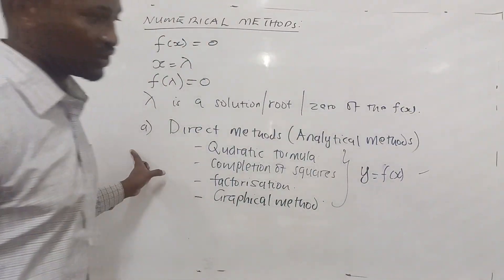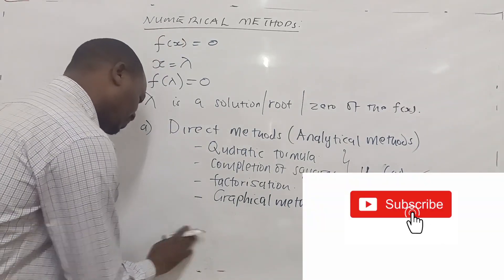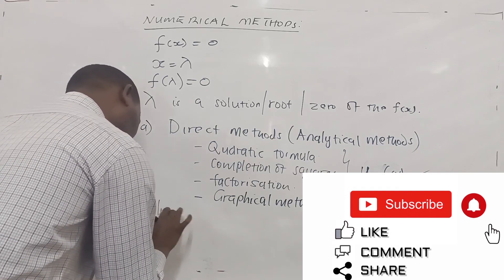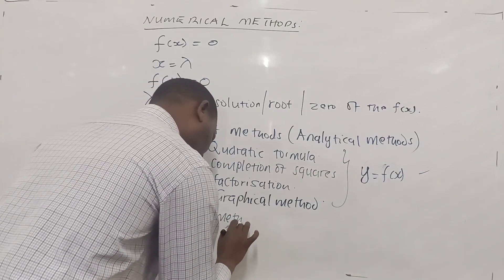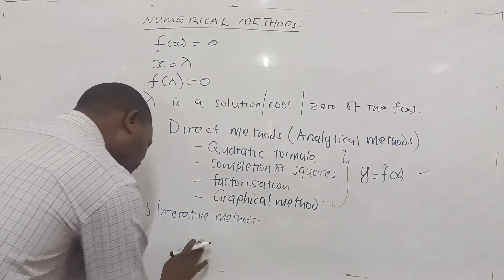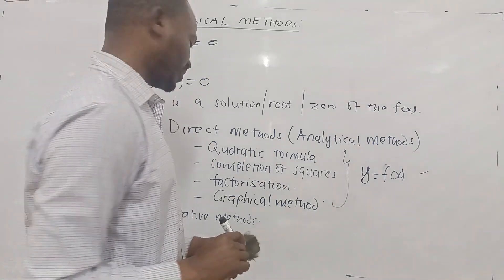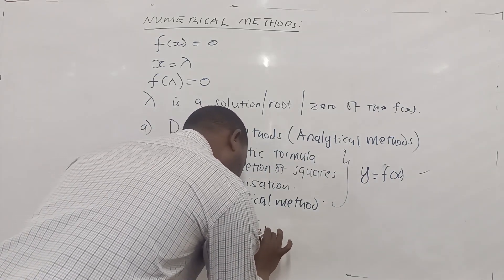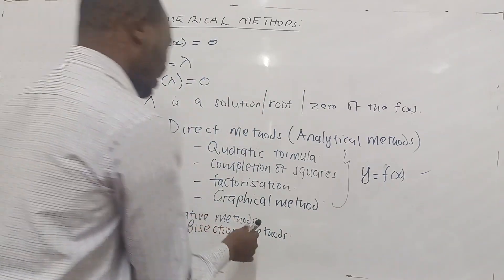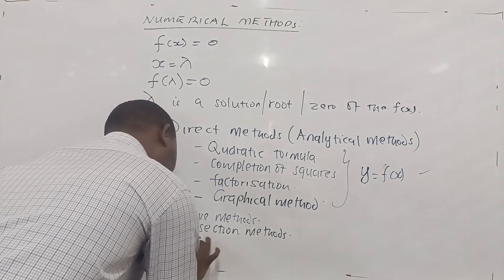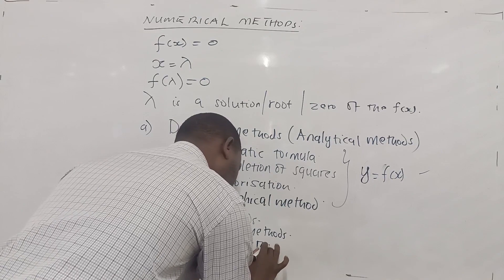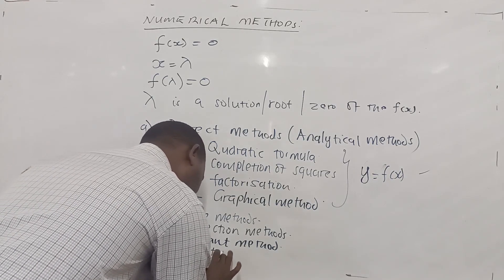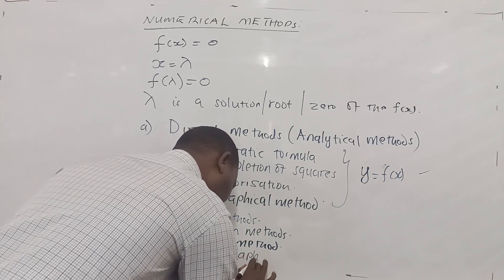We are not going to concentrate on these direct methods, because you have already done a lot about them. We are going to concentrate on what we call iterative methods. These include the bisection method, which involves subdividing a bracket that contains a root of f(x) = 0, the secant method, and the method that is the topic of today's video: the Newton-Raphson method.